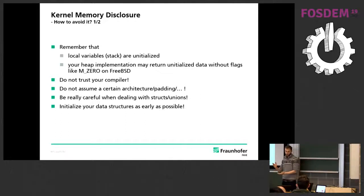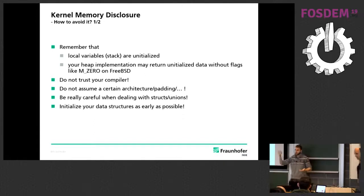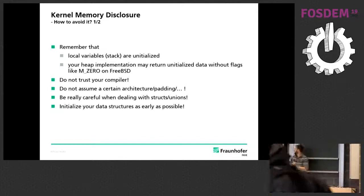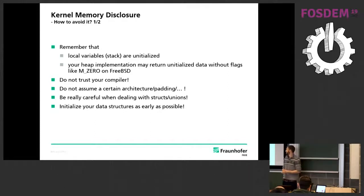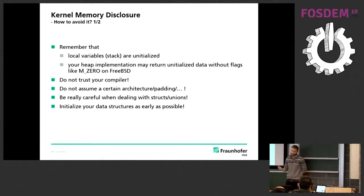So how to avoid it? If you're passing data across trust boundaries — and this doesn't have to be userland; it can be networked for example — local variables on the stack are usually uninitialized, and your heap implementation without zero flags will be uninitialized as well. So initialize it. Don't trust the compiler at the moment — in a couple of years there may be advancement, but for now don't assume any certain architecture padding when laying out structures mentally in memory, because that will break your neck. Initialize your data as soon as possible.